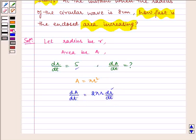Substituting its value we get, this implies dA by dt is equal to 2 pi r multiplied by 5, which is equal to 10 pi r.